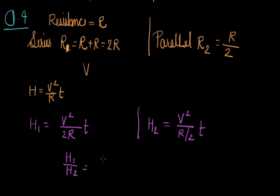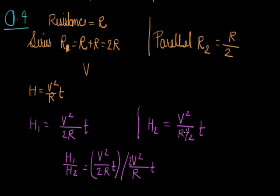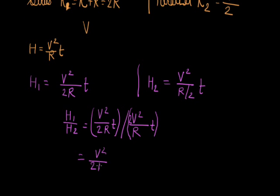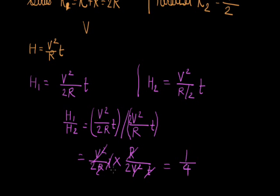We have to find the ratio H1/H2. H1 = V²T/(2R) and H2 = 2V²T/R. So H1/H2 = [V²T/(2R)] / [2V²T/R] = R/(2R × 2) = 1/4. So option C is correct — the ratio is 1:4.